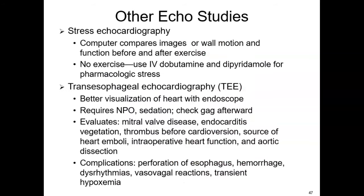Other tests include the stress echo, which can be exercise or non-exercise. Any time a dysrhythmia develops during a stress echo, we want to stop it. A transesophageal echocardiogram (TEE) passes a scope down through the esophagus. A patient undergoing that procedure needs to be NPO for six to eight hours before, and we check the gag reflex before feeding them afterward. The TEE gives great views because of how close the heart is to the esophagus.